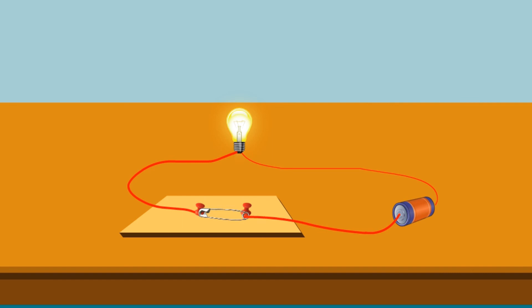When the safety pin does not touch both the board pins, the circuit is open and the current does not flow through it. The switch is said to be OFF.